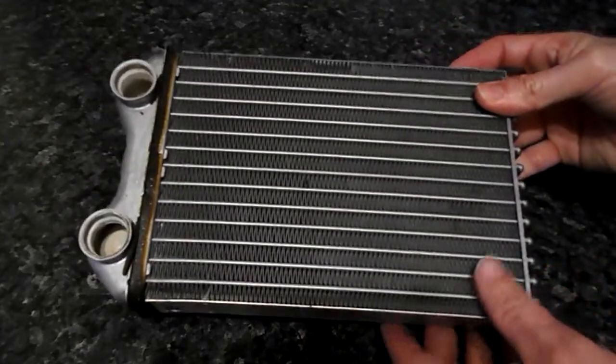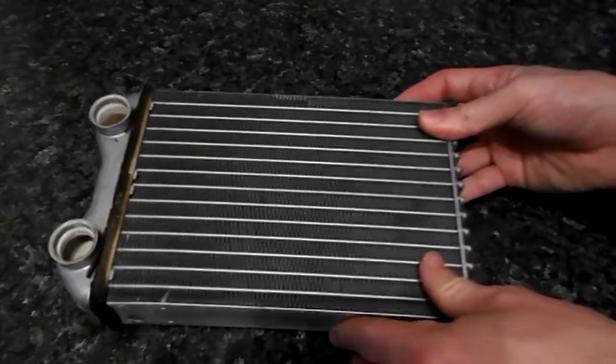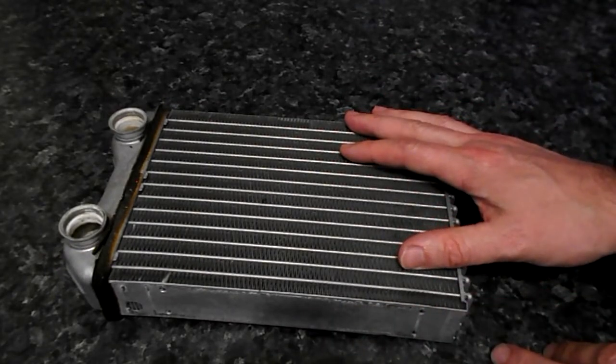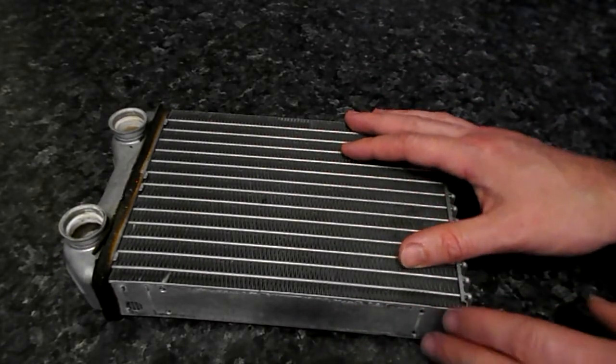What is a heater core, or heater matrix as it's sometimes called? This is a radiator-like component which provides heating for the cabin in a vehicle.